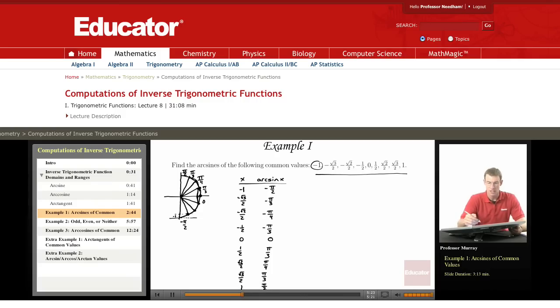So in each case, it's a matter of looking at the value and thinking, okay, if that's my y coordinate, where am I on the unit circle? What angle between negative π over 2 and π over 2 has sine equal to that value?